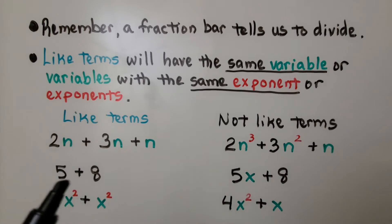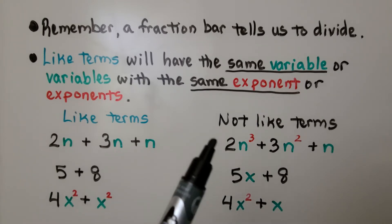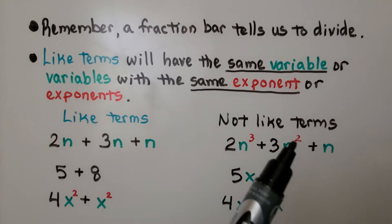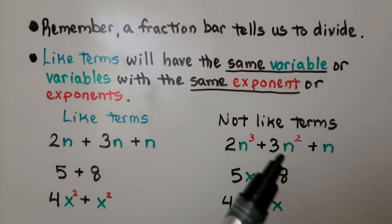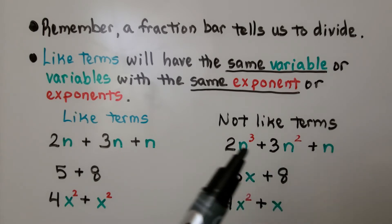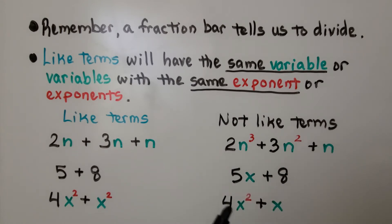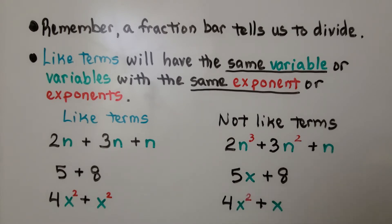We have a 5 plus an 8 — those are like terms. And we have 4x raised to the second power plus x raised to the second power: same variable, same exponent. These are not like terms: we have 2n raised to the third power, 3n raised to the second power, and n with no exponent — none of these three are like. Here we have 5x plus 8, which are not like terms because one has a variable and one does not. And 4x squared and x are not like terms because they don't have the same exponent.